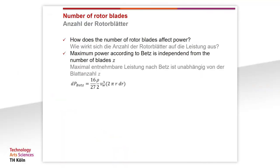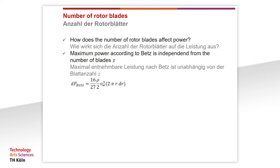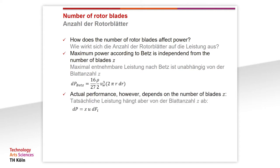I do not understand why we should talk about the number of rotor blades at all. According to Betz, the power from one rotor blade element is not dependent on the number of rotor blades. The power is 16/27 times one half the air density times the wind velocity cubed times 2π dr. There is no mention of the number of rotor blades. That is correct — the maximum power according to Betz is independent of the number of rotor blades, but the actual power however depends on the number of rotor blades.